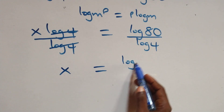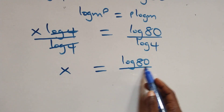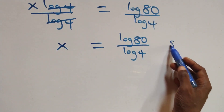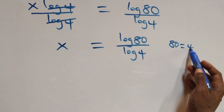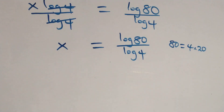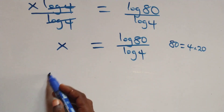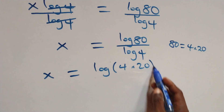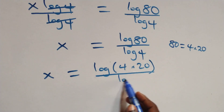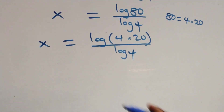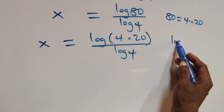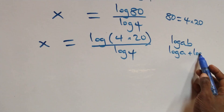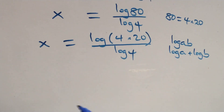We express 80 as 4 times 20, so x equals log(4 times 20) over log 4. Then we apply the product rule of logarithms, where log(a times b) equals log a plus log b.